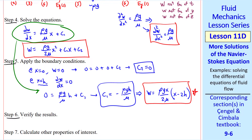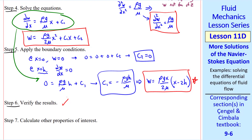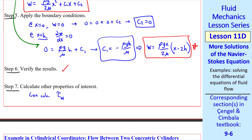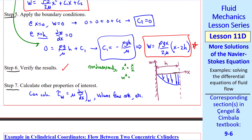Step six is to verify the results. When x equals zero, w equals zero; and when x equals h, dw/dx equals zero — both boundary conditions are matched. The final equation also satisfies the z-momentum equation and the continuity equation. Step seven is to calculate other properties of interest, such as tau at the wall (mu dw/dx) or volume flow rate. If we non-dimensionalize using x* equals x/h and w* equals w mu / (rho g h²), we get a plot valid for any fluid, any h, or any gravity — which is why we often plot results non-dimensionally.